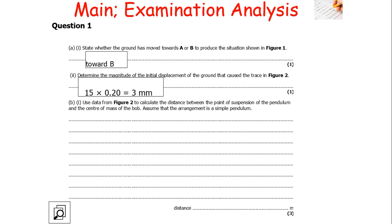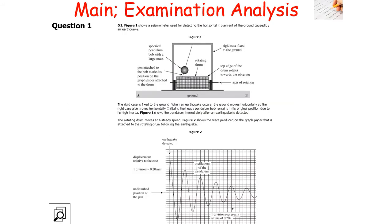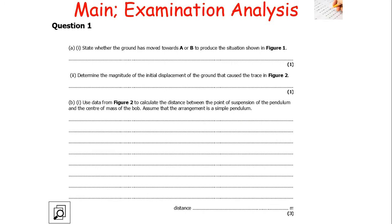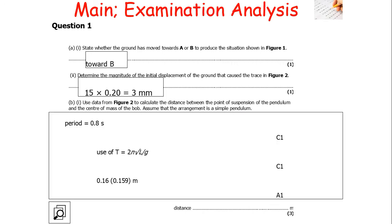Using data from figure 2, we need to calculate the distance between the point of suspension of the pendulum and the centre of mass of the bob, assuming a simple pendulum. We use T = 2π√(L/G) and rearrange to make L the subject. From figure 2, one complete oscillation spans divisions representing 0.2 seconds each, giving a time period of 0.80 seconds. Substituting into the equation gives an answer of 0.16 metres.